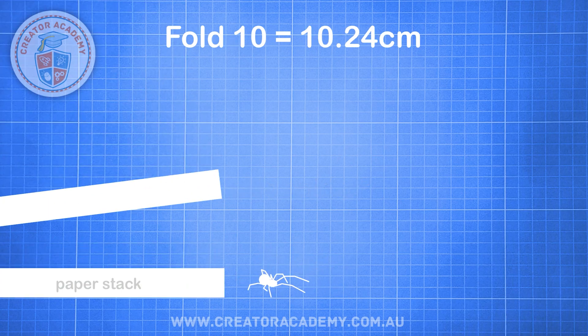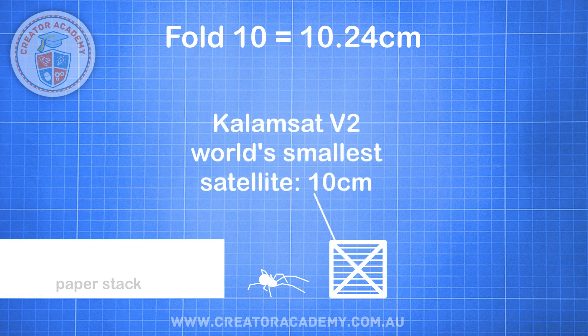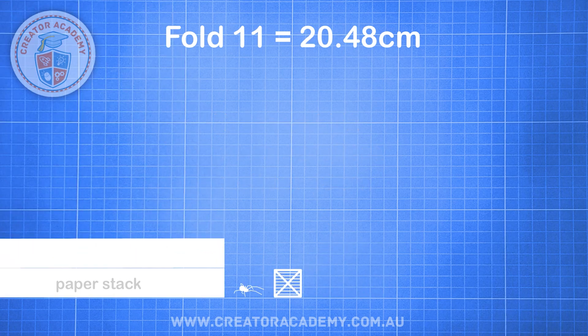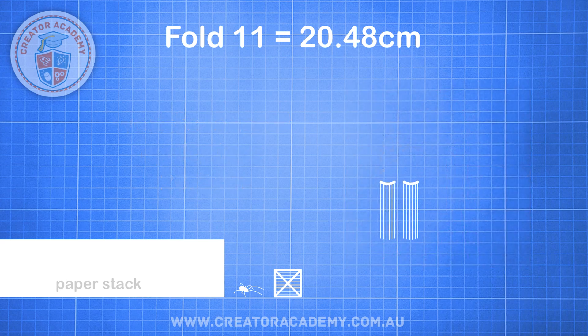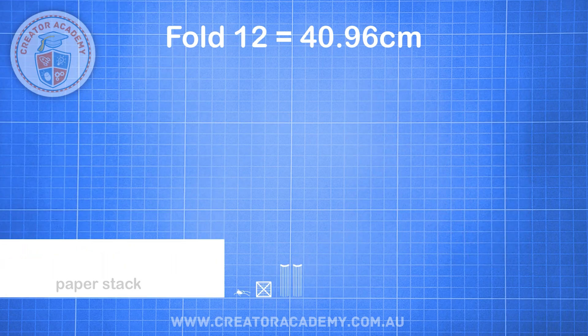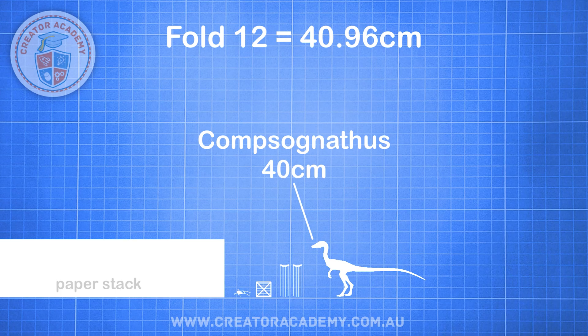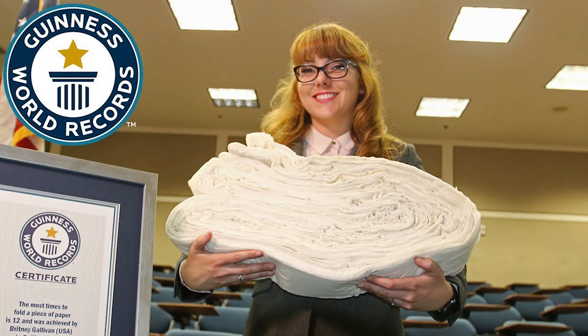5 centimetres is the length of an average Australian spider — I'm only joking, Australian spiders are much, much bigger than that! At our 10th fold, our piece of paper is about the height of the world's smallest satellite. Fold 11 takes our stack to 20 centimetres high, or the length of the world's longest eyelashes. Fold 12 brings your stack to 40 centimetres, around the size of Compsognathus, the smallest known dinosaur. 12 folds is also the world record for the largest number of paper folds, set by Brittany Gallivan in 2002, using over a kilometre of toilet paper.